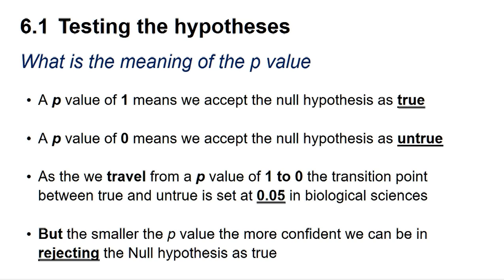So what is the meaning of the p-value? A p-value of 1 means we can accept the null hypothesis as true, whereas a p-value of 0 means we can accept the null hypothesis as untrue. As we travel from a p-value of 1 to 0, the transition point between true and untrue is set at 0.05 in the Biological Sciences. The smaller the p-value below 0.05, the more confident we can be in rejecting the null hypothesis.